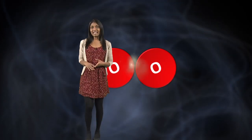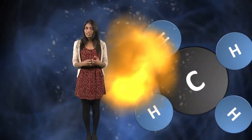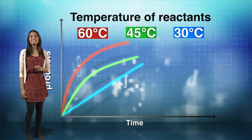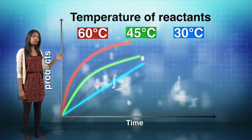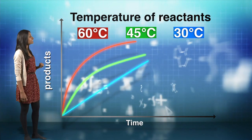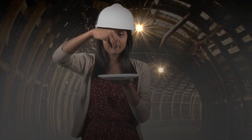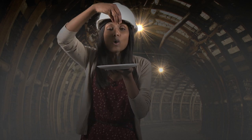For this to happen the reacting particles have to collide with each other with sufficient energy. As you can see increasing the temperature of the reactants — a small spark has ignited coal and flour dust in the air.